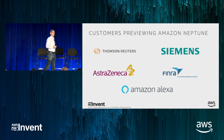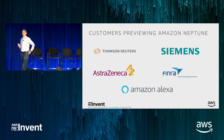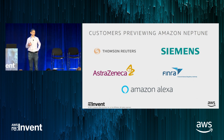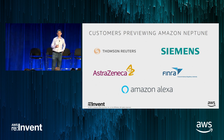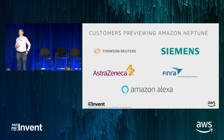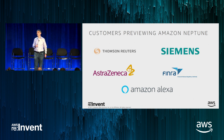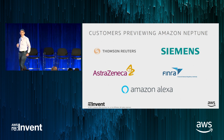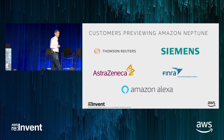We had quite a few customers in private preview before announcing the public preview here at re:Invent. Key customers include Thomson Reuters, AstraZeneca from life sciences, Siemens, FINRA, and Amazon Alexa itself. All these companies have really exciting graph use cases — in fact, they all have multiple graph use cases. We're constantly looking to learn more, so if you have additional use cases you're thinking about, come talk to us after the session.